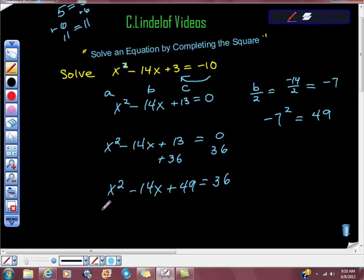From here, I'm going to go ahead and factor. And now I know that there are two numbers that multiply to give me positive 49 and add to give me negative 14. And they are x minus 7 times x minus 7 is equal to 36.